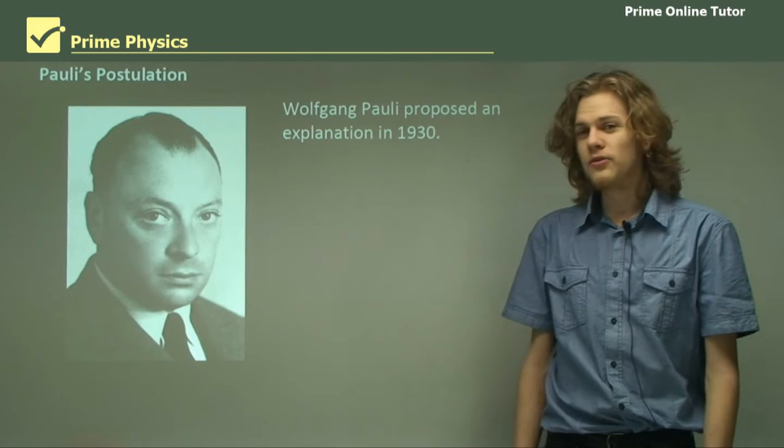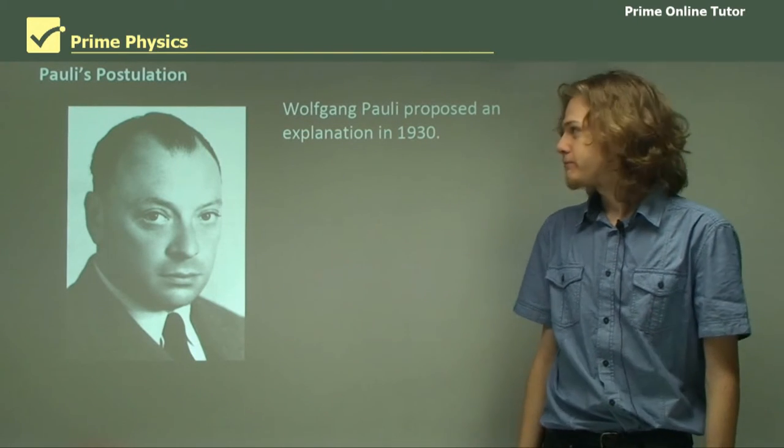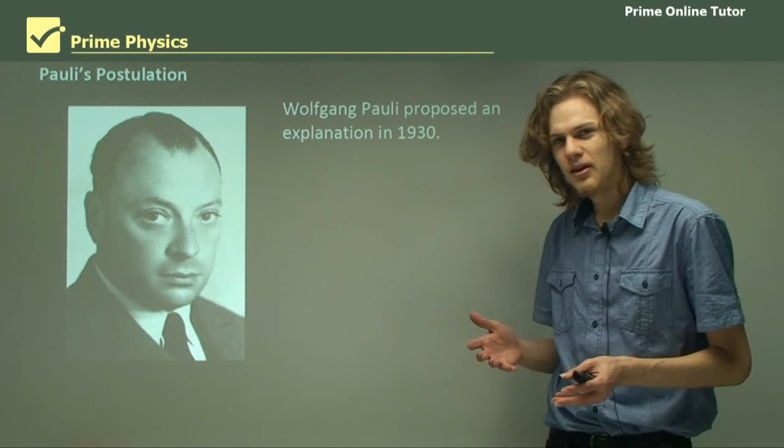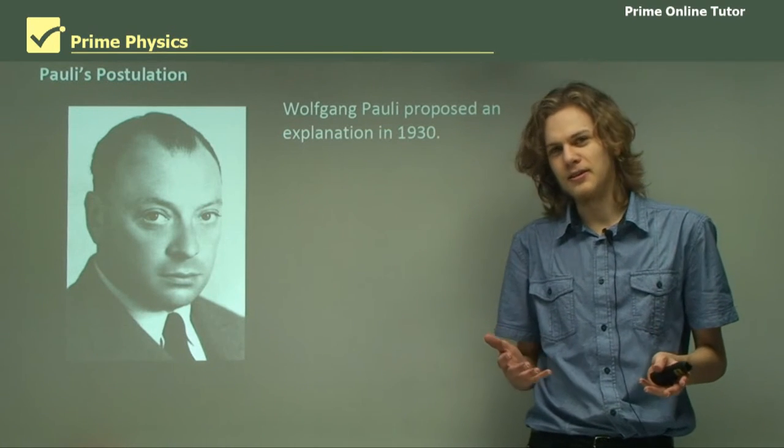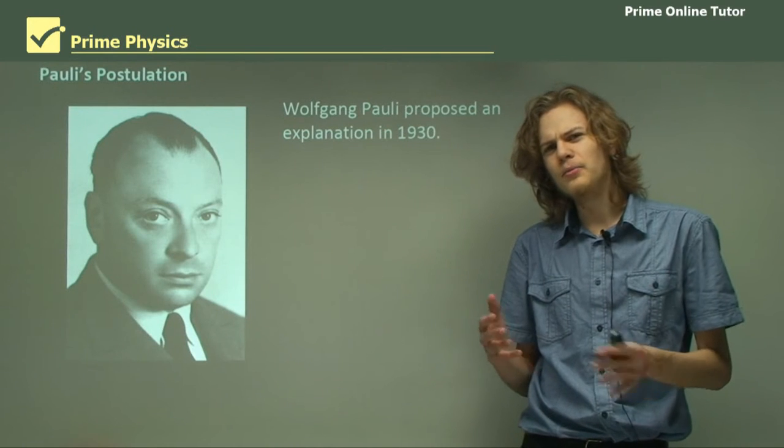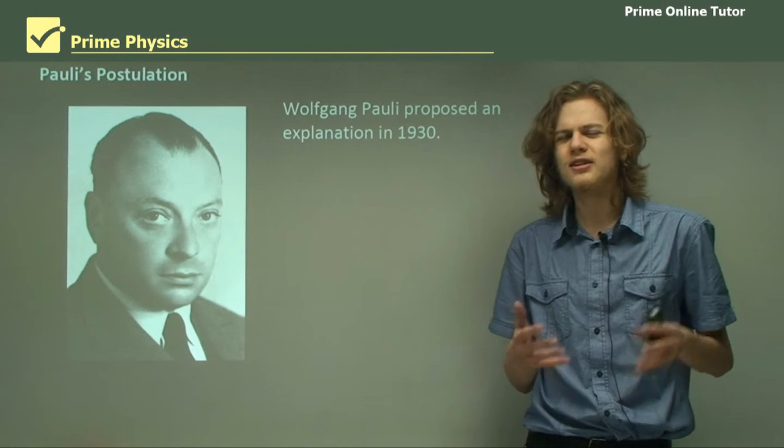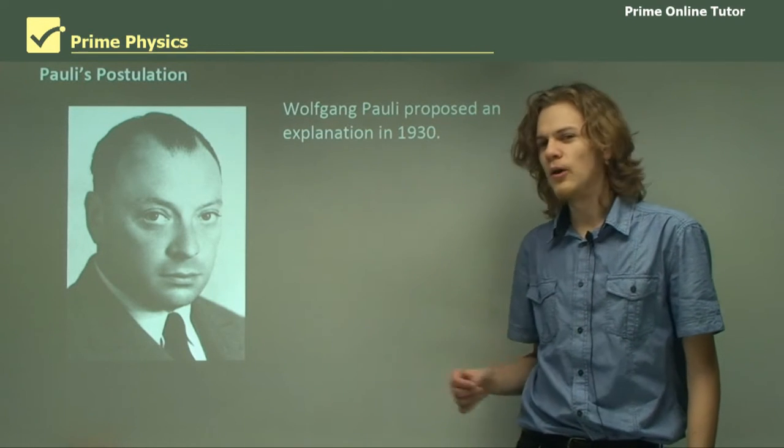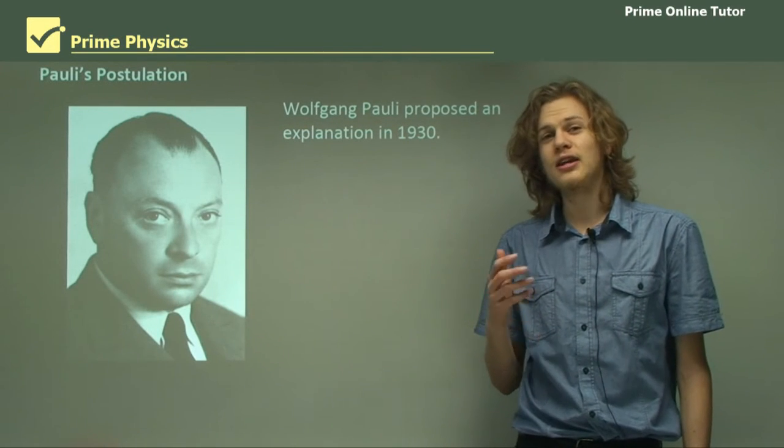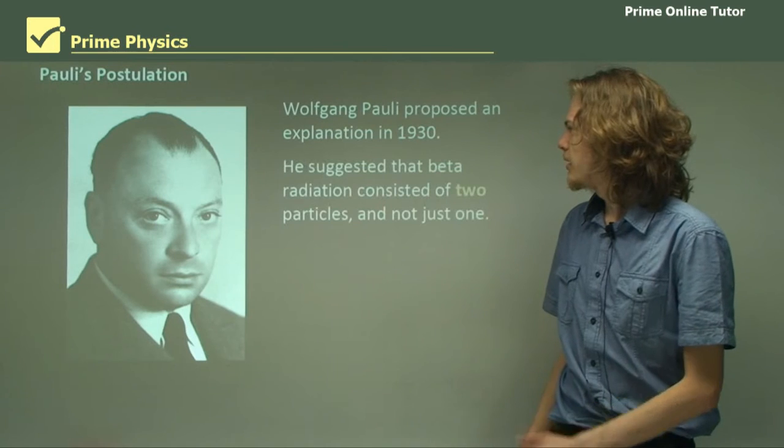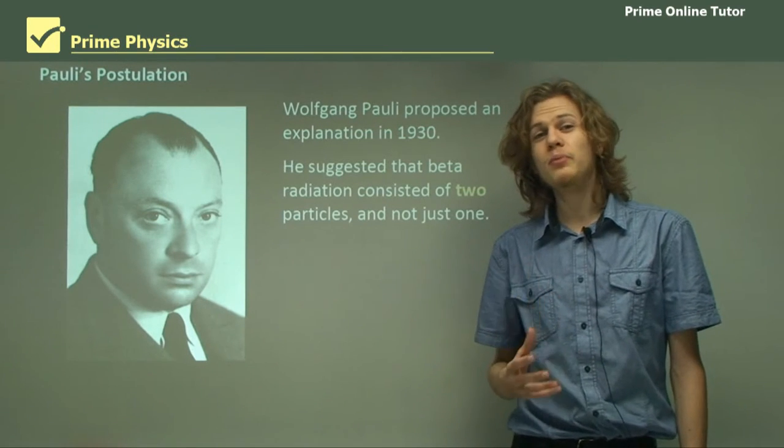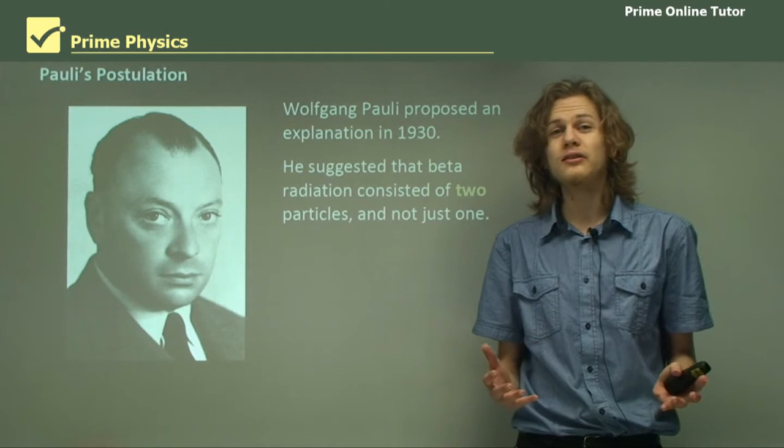This guy over here, Wolfgang Pauli, proposed an explanation to why this happened in 1930. What would you suggest happened if you figured out that the beta particles were behaving strangely and didn't have enough energy? Pauli figured out a way to say where the missing energy had gone. He suggested that there was a new type of particle that was emitted during beta radiation and just wasn't being detected.